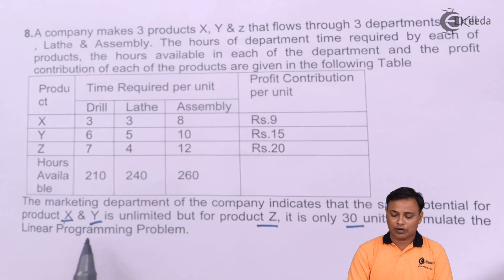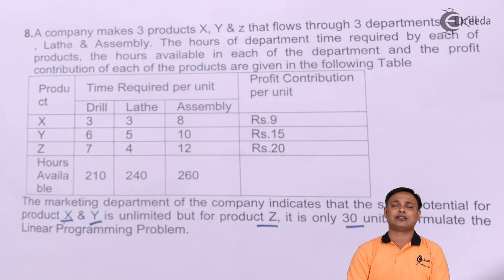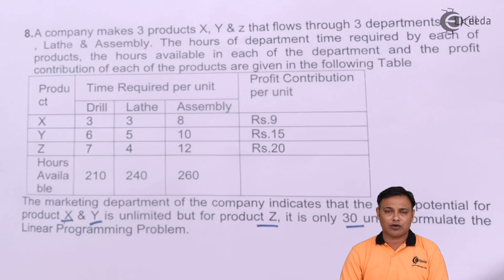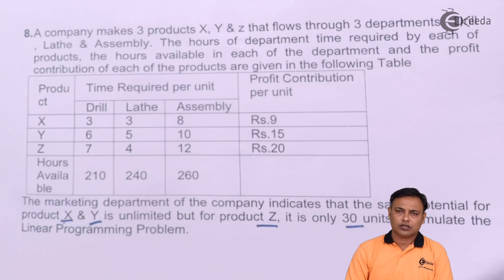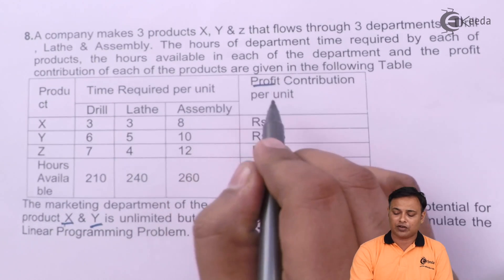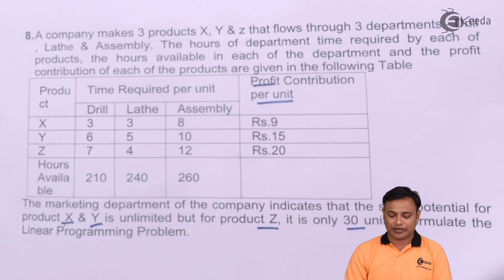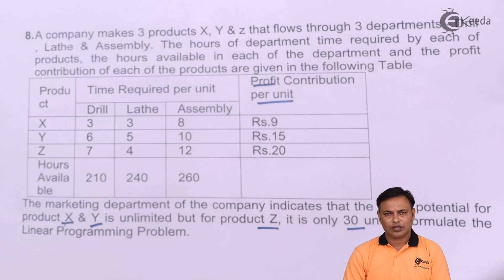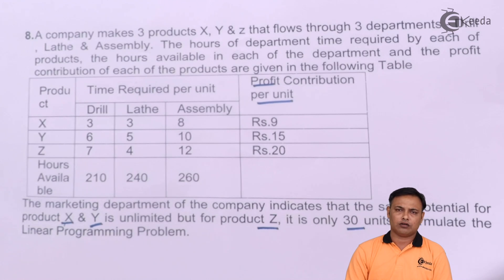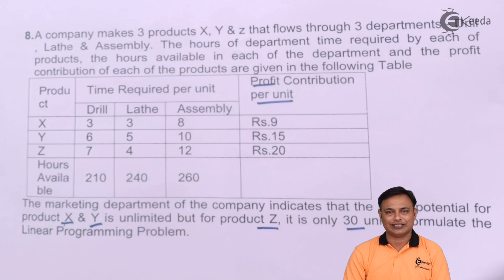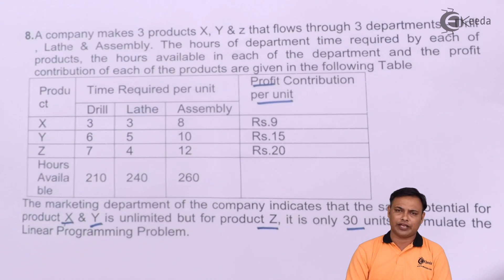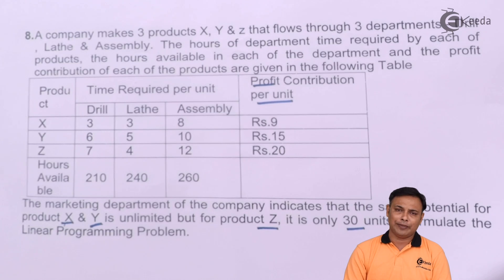So formulate this as a linear programming problem. They haven't specified whether this is a maximization or minimization problem, and we need to understand this from the problem — because we are given the profit per unit, it is a maximization problem. Since we are already given a ready-made table, I won't make the table again in the solution. Making the table in the solution is not mandatory — it can be skipped in case you have very limited time in the exam.